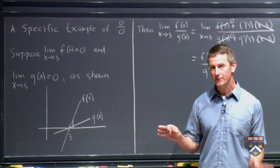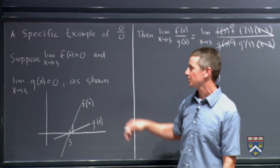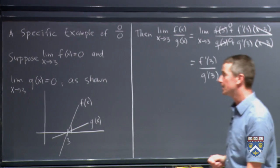Now if you both started at different places, it would be a completely different story. This only works for this indeterminate form 0 over 0, this sort of geometric argument here.